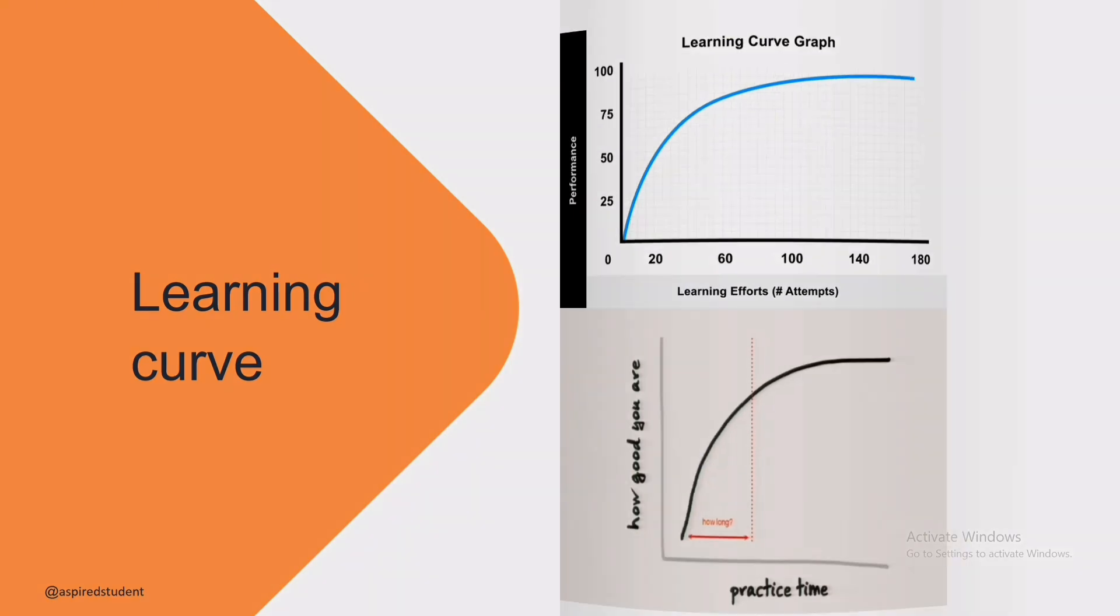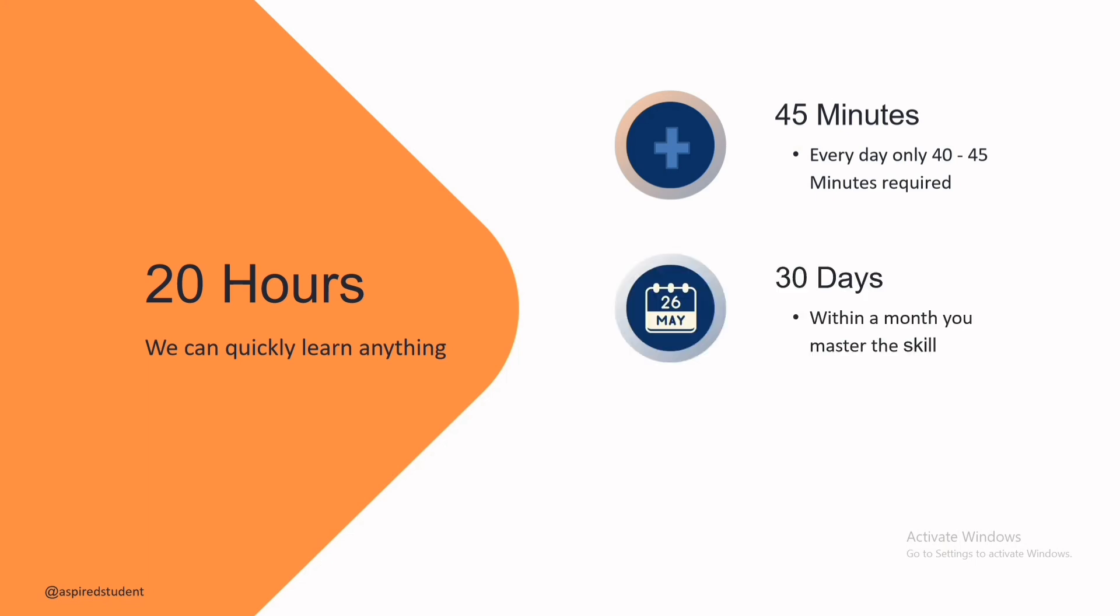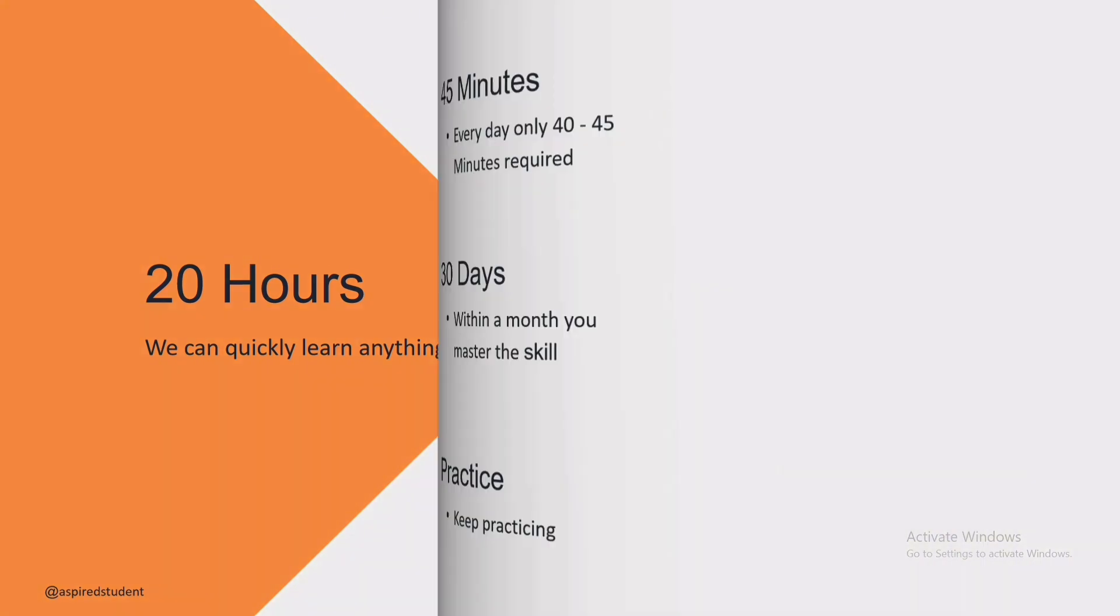Let's explore 20 hours. What says? In 20 hours, we quickly learn anything. Only by spending 40 to 45 minutes a month. Only 45 minutes per day for 30 days. But we have to keep practicing. We can acquire any skill by practicing 20 hours, 45 minutes per day for a month. That's amazing.